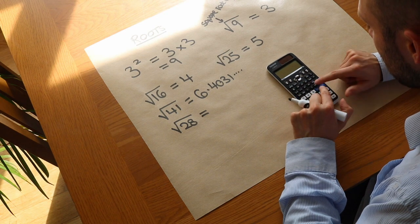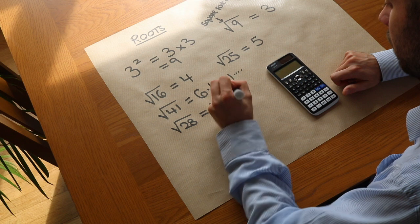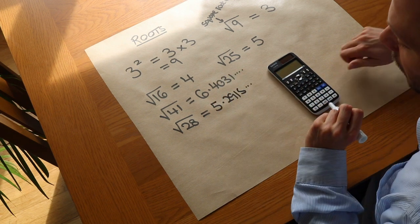Let's do it on the calculator. Square root of 28, SD key, is in fact 5.2915 etc. So it was between 5 and 6.